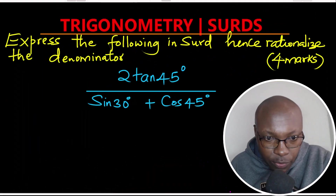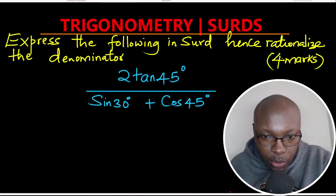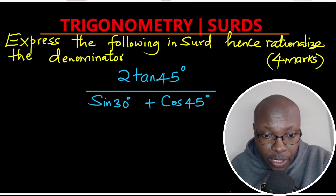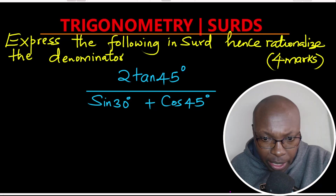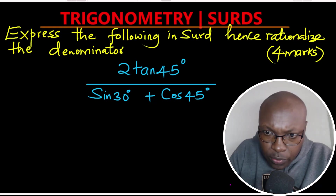Let's solve this question involving trigonometry and SADS. Express the following in SADS, hence with a rationalized denominator: 2 tangent of 45 degrees divided by sine of 30 plus cosine of 45 degrees.